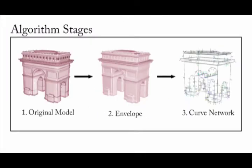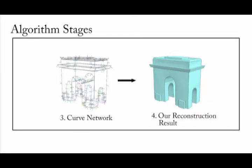We briefly describe the key stages of our method. We first approximate the input model using a manifold closed envelope surface, and then extract from it a curved network providing a vector representation of our model. Our reconstruction step recovers the geometry of the abstracted model from the vector representation.